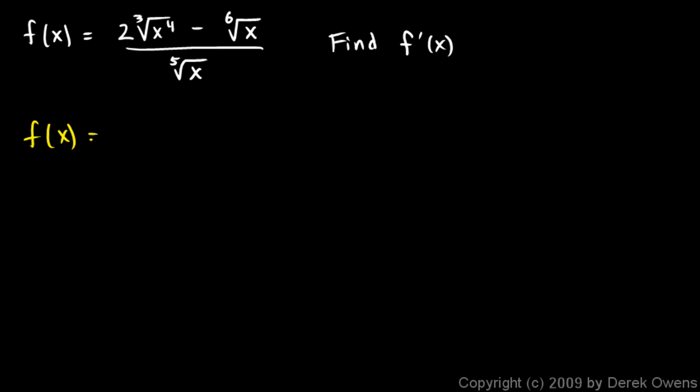So I'm going to say f of x is equal to 2 times x to the 4 thirds, because this 4 here is an exponent, and the cube root means a denominator of 3 in the exponent. So that's 2 times x to the 4 thirds, minus the 6th root of x here, is x to the power of 1 sixth.